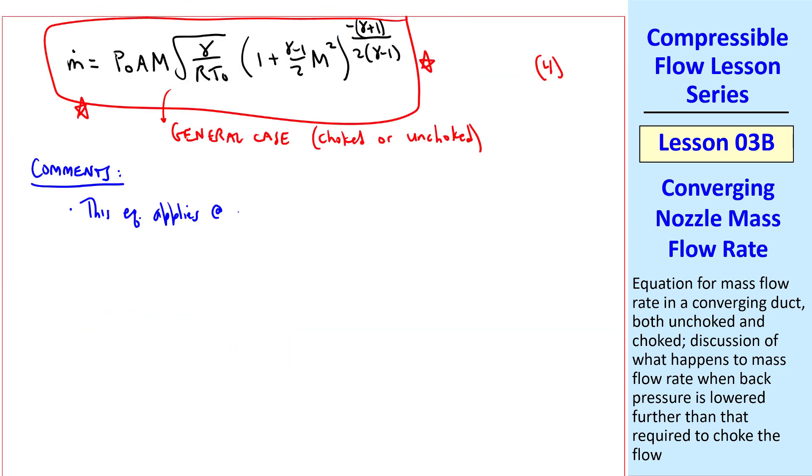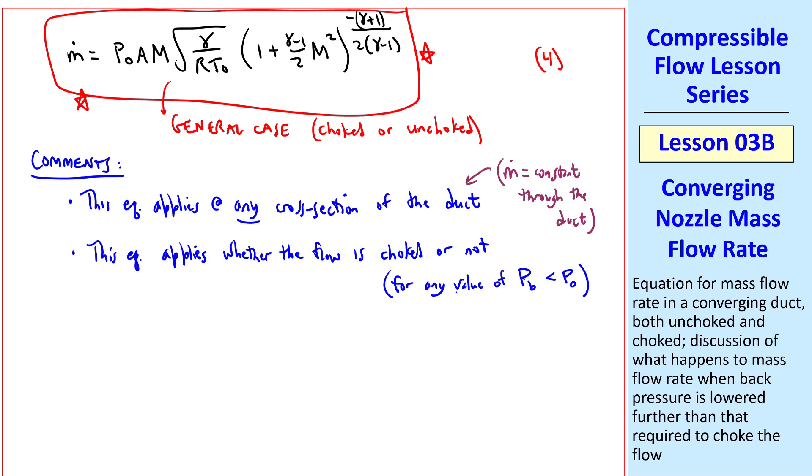Some comments. This equation applies at any cross-section of the duct, since it's simply an expression of conservation of mass. And as I've already said, this equation applies whether the flow is choked or not. In other words, for any value of back pressure. Of course back pressure has to be less than P₀, or there won't be any flow. And I should say up here that m-dot is constant through the duct. Well, since this applies anywhere in the flow, this equation also applies at the exit plane where A equals A_E, the exit plane area, and Mach number is M_E.